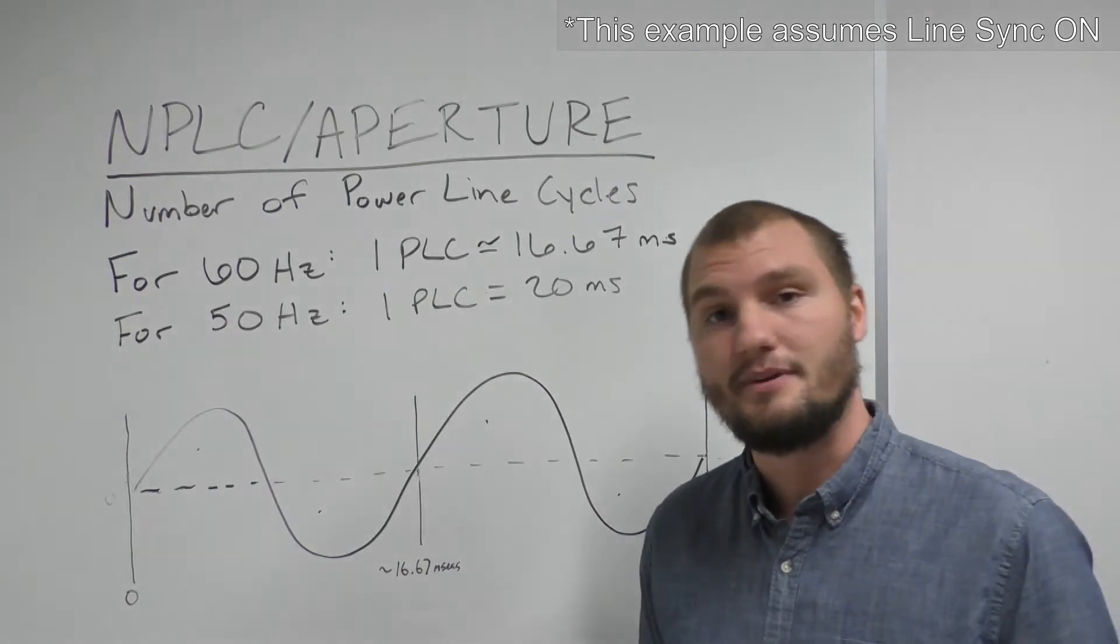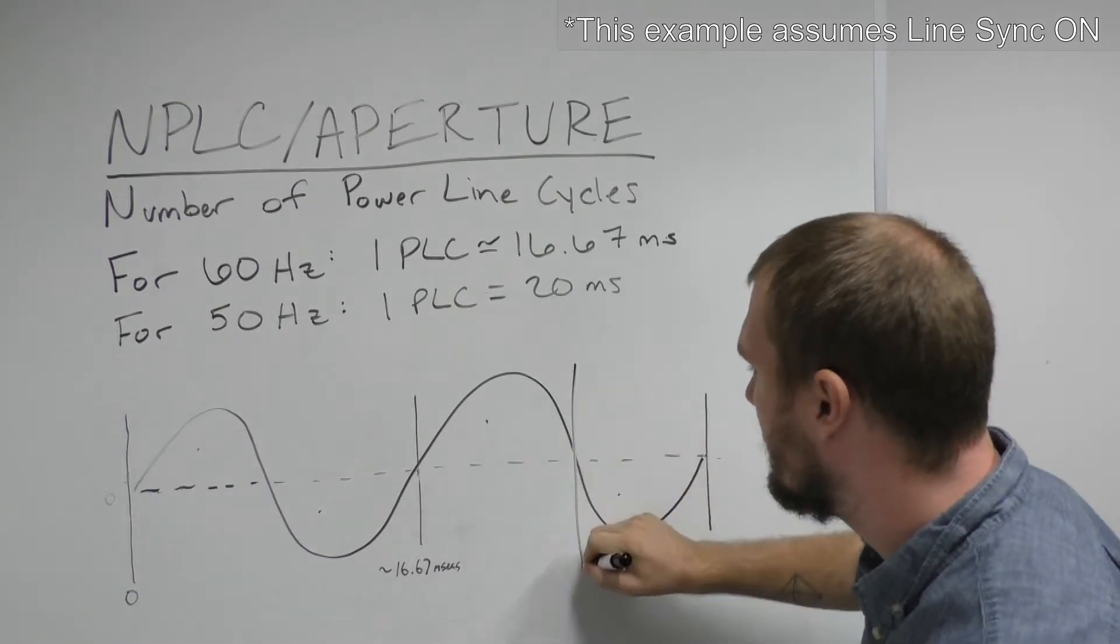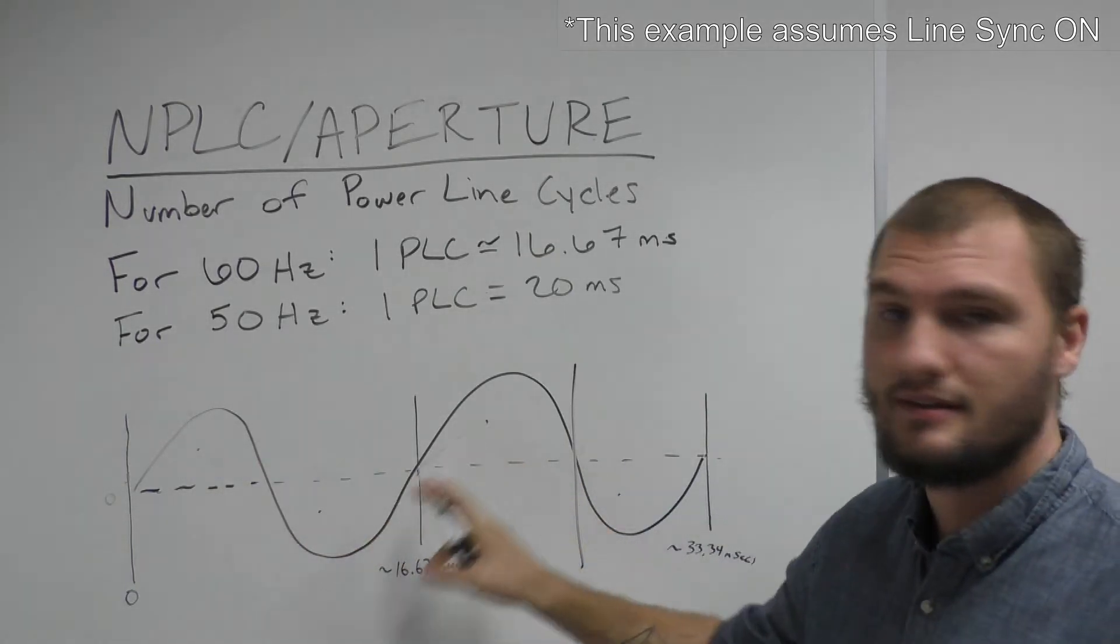If you were to use a fractional PLC such as one and a half then you see that you would get more positive noise than negative noise.